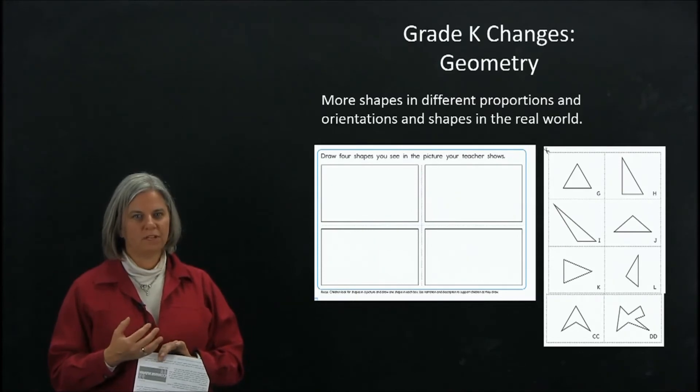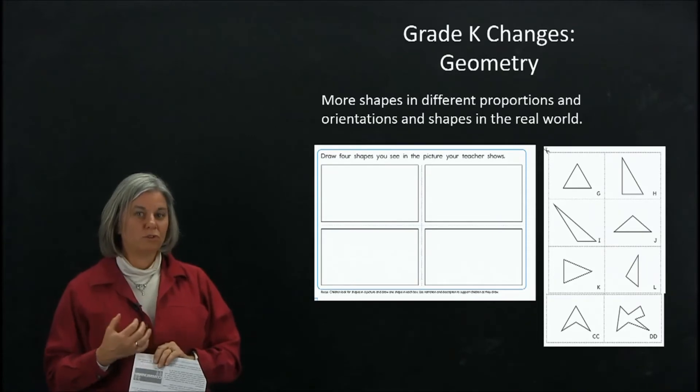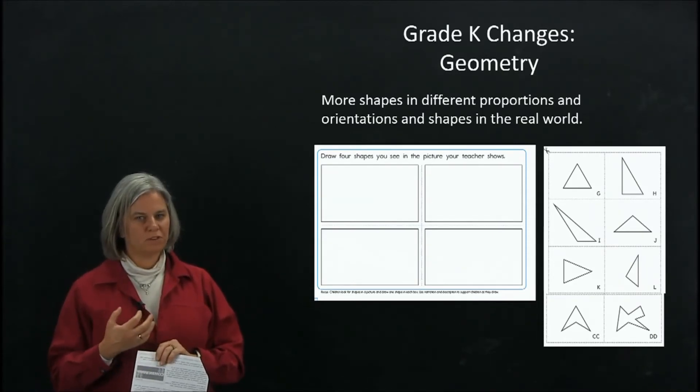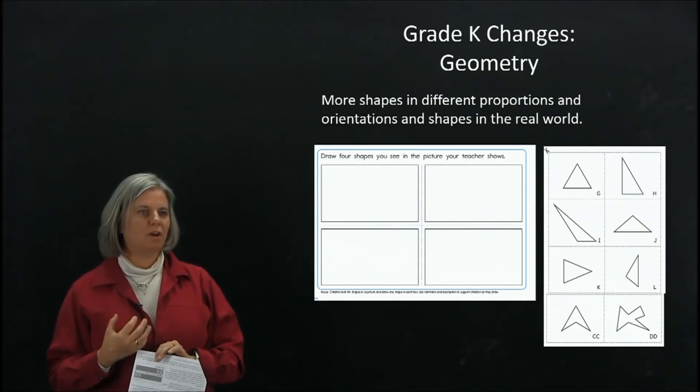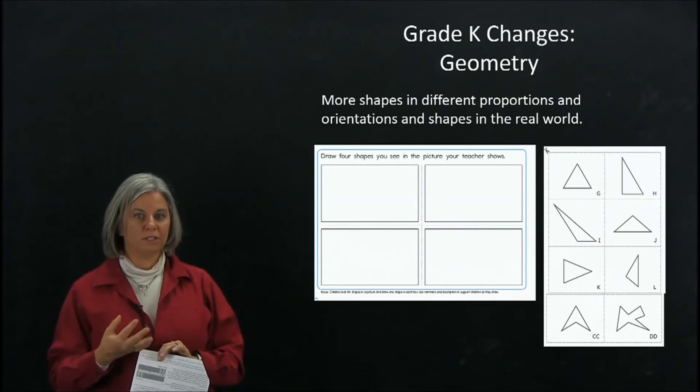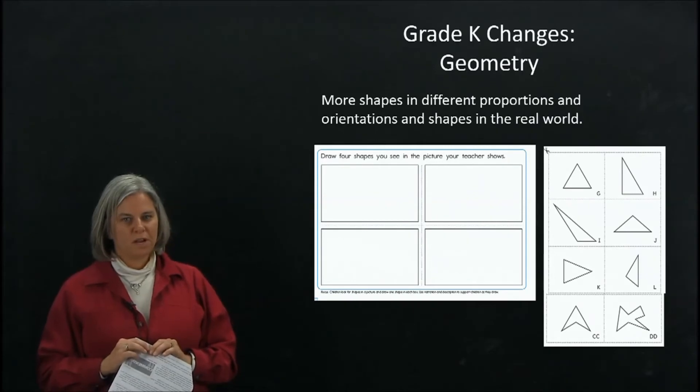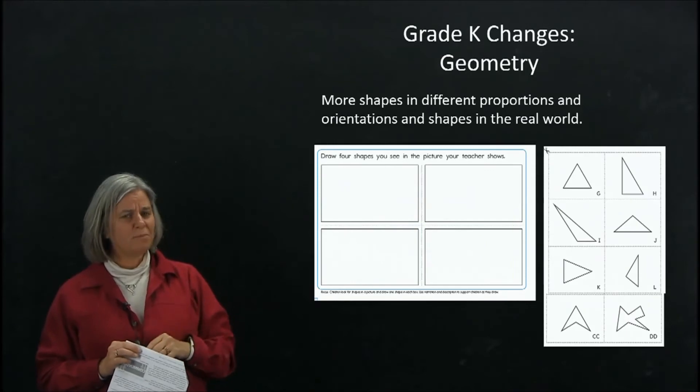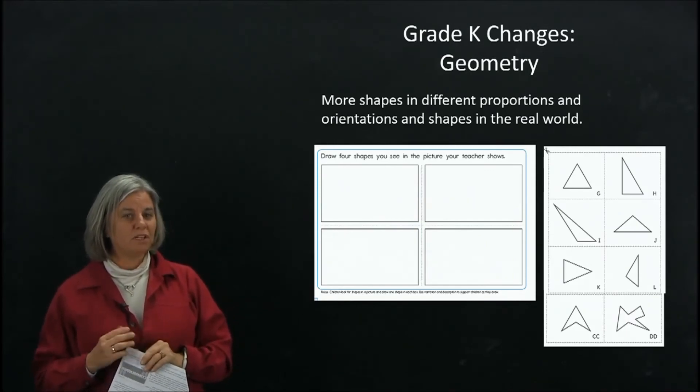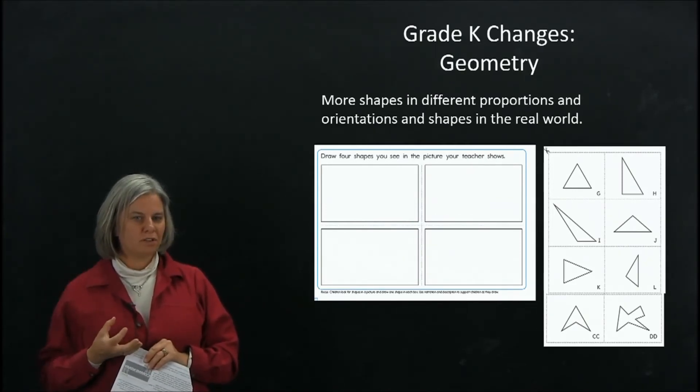Another place that we've enriched the content is in the geometry strand. This is a place where we feel like the Common Core has given us some nudges to do even more of what we tried to do before. We try to have shapes in different proportions and different orientations. We've always tried to resist the notion that all triangles are equilateral triangles sitting on their base, but the Common Core has really pushed us to think about doing that even more and even better. On the far side there is just a subset of shape cards that we use in a lot of activities.